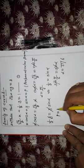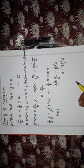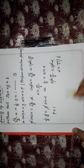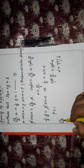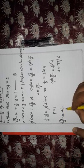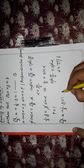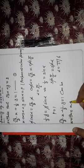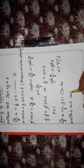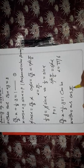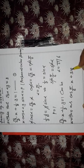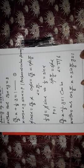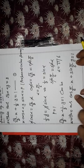Similarly, p = 1. So the equation (√3/2)·x + (1/2)·y = 1 can be written as cos(π/6)·x + sin(π/6)·y = 1. This is the perpendicular form of the equation.